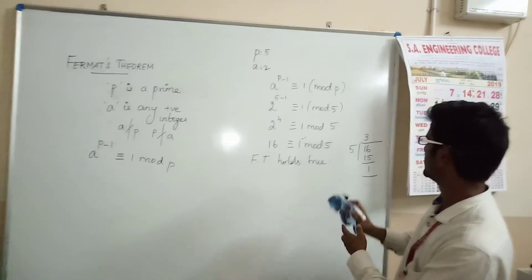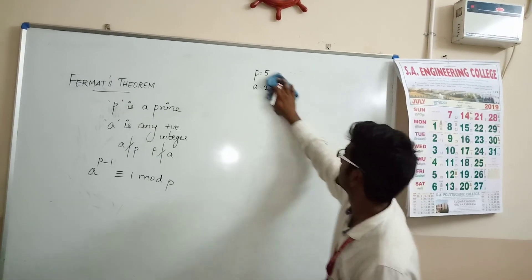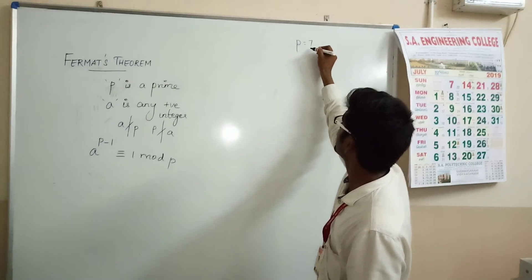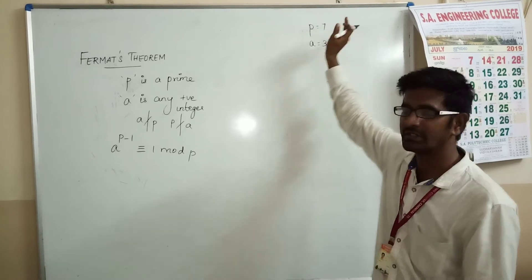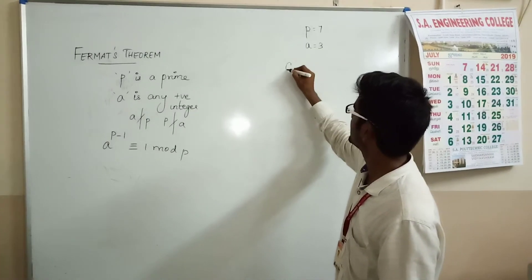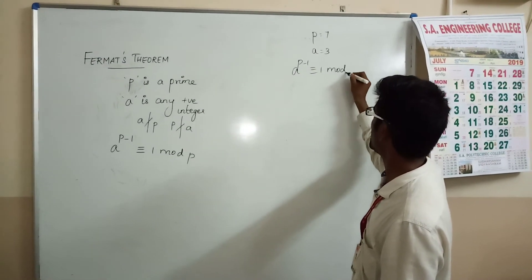We will take one more example. Let p = 7 and a = 3. Obviously when we look at these values, it is clear that Fermat's theorem should hold true. So a^(p-1) is congruent to 1 mod p.